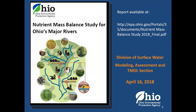Here's what the report looks like. This is our second version of the report, and you can download it right now on our website. A really easy way to get it: just Google 'Ohio EPA nutrient mass balance study.' It pops right up, and I'll mention that again at the end.